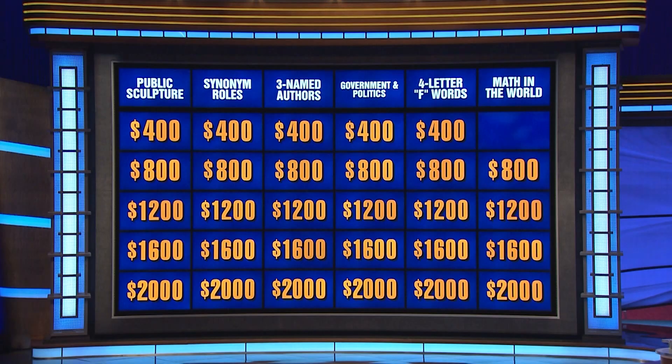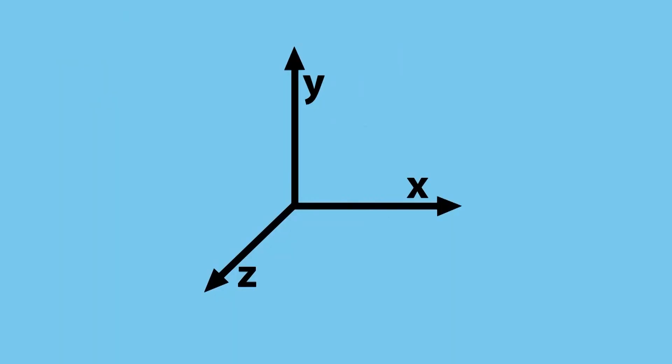Math for 800. Listen up. Video game designers plan out their games using this kind of system that by definition uses x, y, and z values to determine the position of a point. John. What is a coordinate system? That's right.